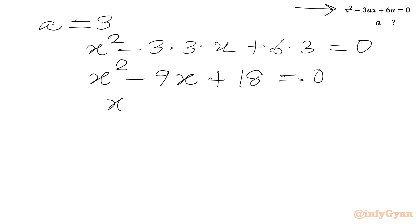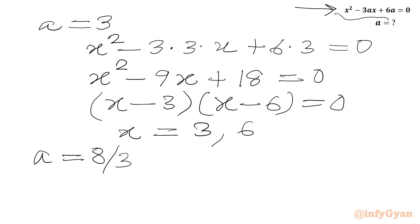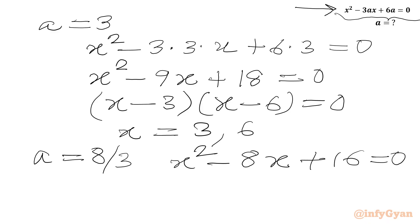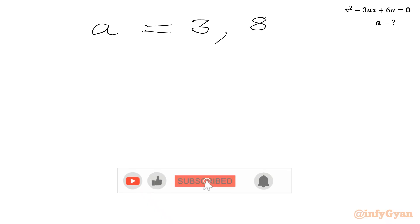For A = 8/3, plugging into the quadratic gives x² - 8x + 16 = 0. This is a perfect square of (x - 4), giving repeated roots 4 and 4. So our final answers are A = 3 and A = 8/3.